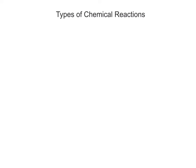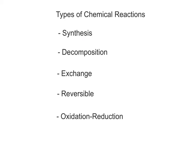There are many kinds of chemical reactions taking place in living and non-living things. We will focus on five major types of chemical reactions commonly found in the human body: synthesis, decomposition, exchange, reversible, and oxidation-reduction reactions.